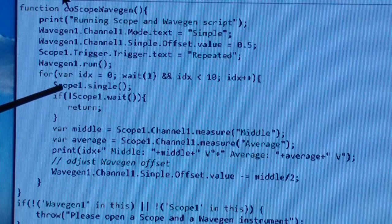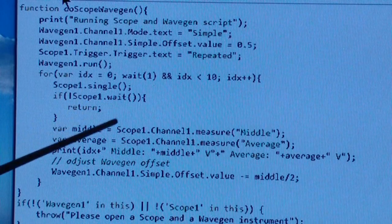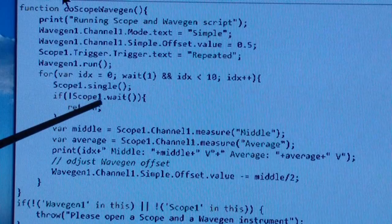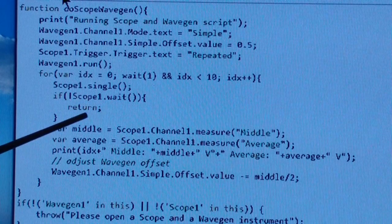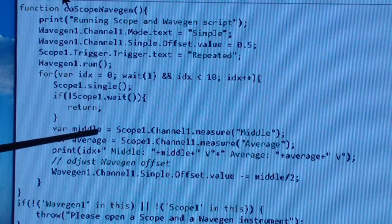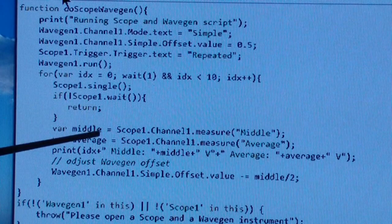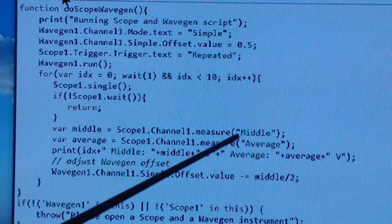Then you enter a for loop that includes a single scope acquisition. Then you wait—if the wait doesn't work you return, but if the wait works, you fall on down through here.